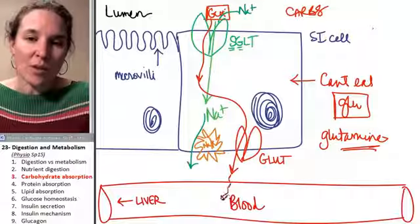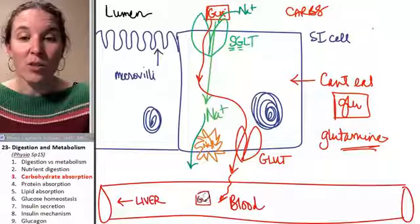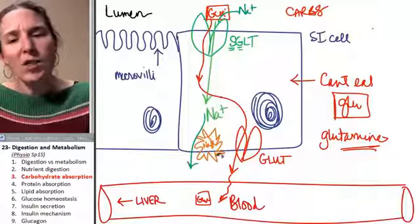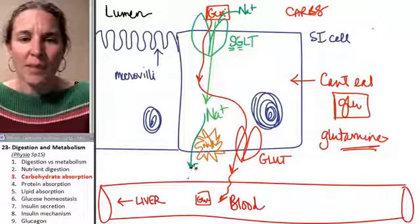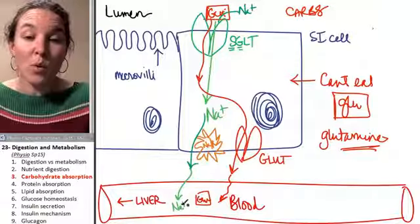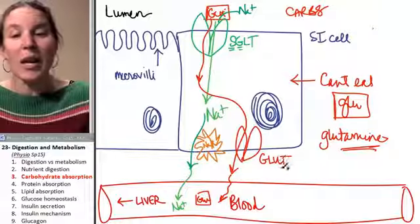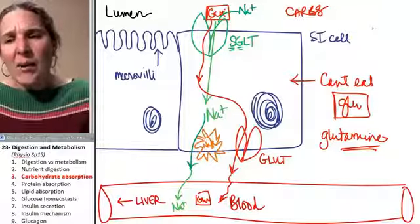And guess where the glucose goes? Into the blood. So now you have glucose in the blood. What else did you get into the blood while you were at it? You also got sodium. You absorbed sodium from the lumen of the digestive tract as well.